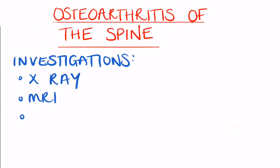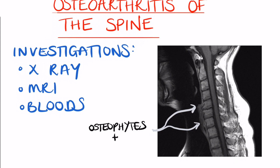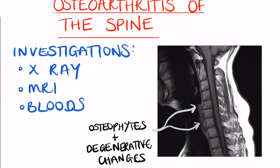Blood tests should also be done to exclude other diseases, and MRI scans are able to show possible damage to discs or narrowing of areas where spinal nerves exit. You can see in this MRI scan shown here evidence of osteophytes and also degenerative changes to the intervertebral discs themselves.